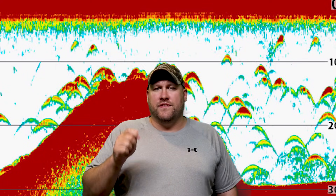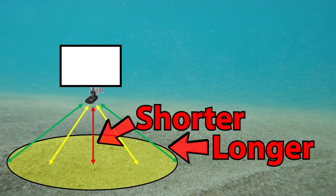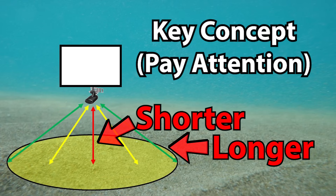We're going to take a brief rewind and go back over one of the key concepts of why fish show up as arches on our fish finder screen. As our sonar sound wave travels through the water column, the lines at the extremities are longer than those in the center. Further out in our sonar cone, not only does it take longer for our sound wave to get to its target, it also takes longer to return back to the transducer from its target.